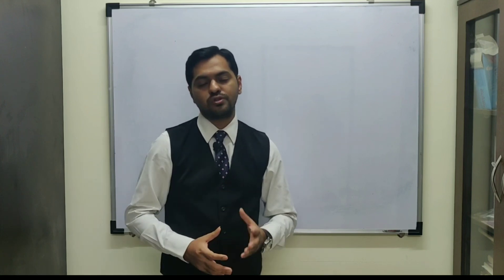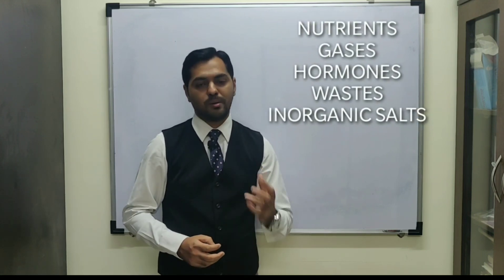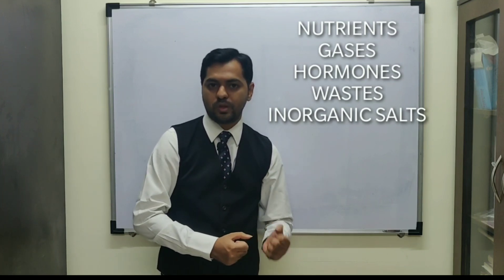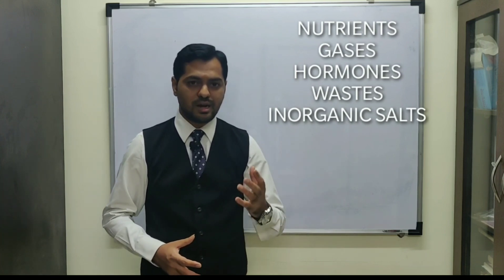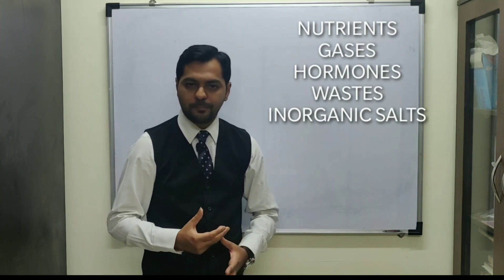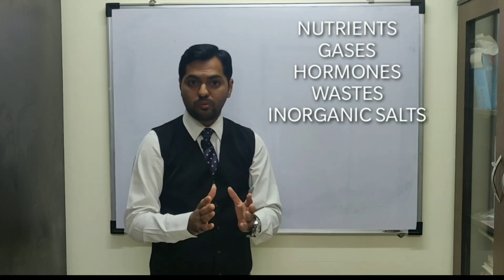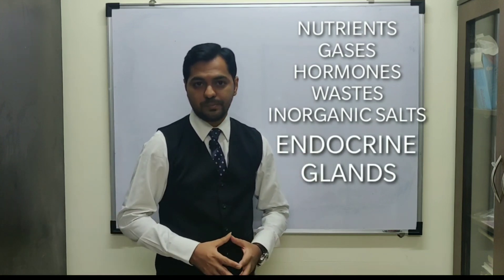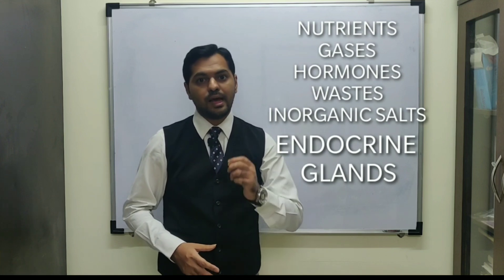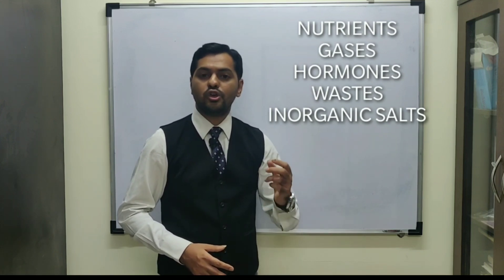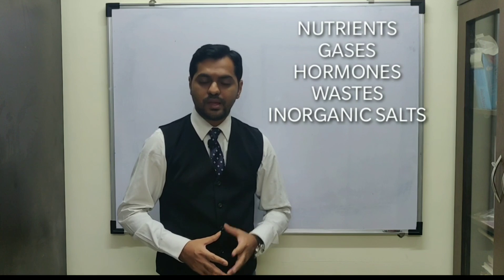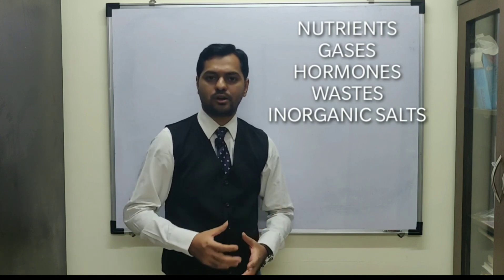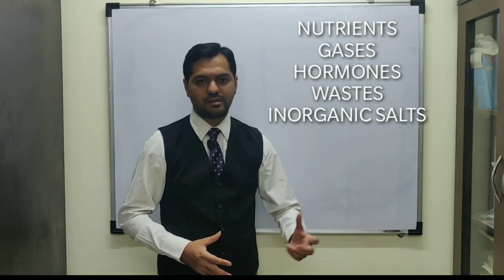About 3% of solutes consist of nutrients like glucose and amino acids, which are digested nutrients absorbed into the bloodstream. Plasma also contains dissolved gases like oxygen and carbon dioxide, hormones secreted by endocrine glands directly into the bloodstream, nitrogenous waste products like urea and uric acid, and inorganic salts in ionic forms such as Na⁺, Cl⁻, and other electrolytes.